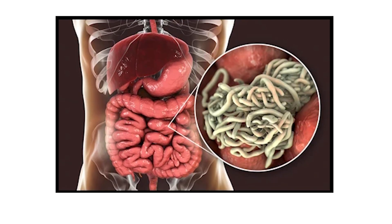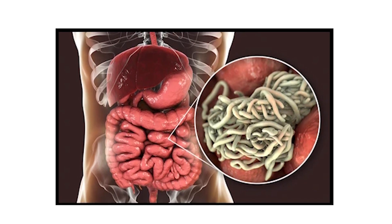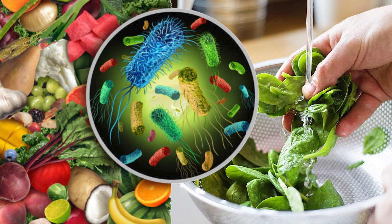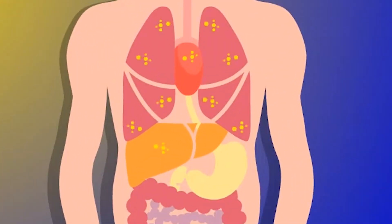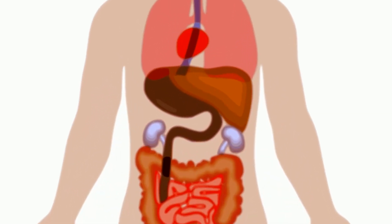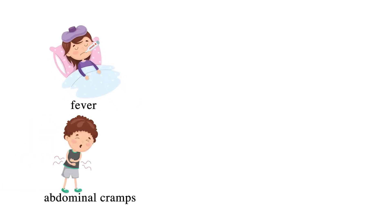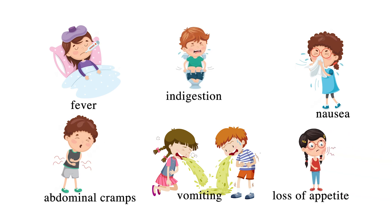Roundworm, or Ascaris, is one of the common parasites found in the intestine of human beings. Infection occurs through contaminated food and water. The juveniles reach the human body, migrate through the liver, heart, and lungs, and reach the small intestine where they mature into adults. Adult worms present in the intestine cause constant mechanical irritation. The toxins released by worms result in fever, abdominal cramps, nausea, vomiting, indigestion, loss of appetite, and anemia.